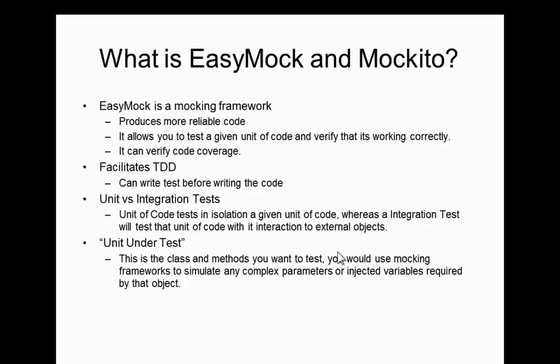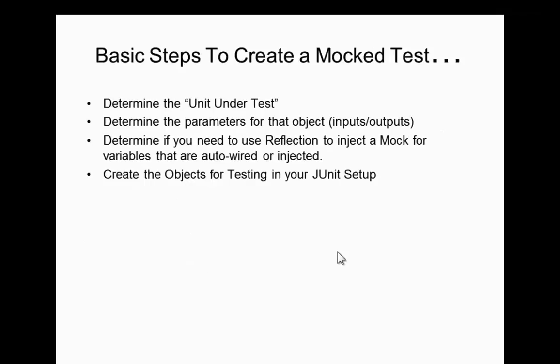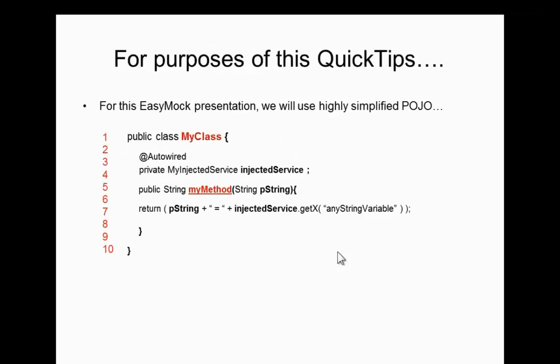The unit under test is the class and methods you want to put in your unit test. You will use mocking frameworks to simulate complex parameters or any injected variables that are autowired into the object. The basic steps to create a mock test are: first, determine the unit under test — the code you want to test; determine what the parameters are for the object input and output; use reflection to inject a mock for auto-wired, injected, or private variables; create these objects in your JUnit setup; then run your test and get the results.